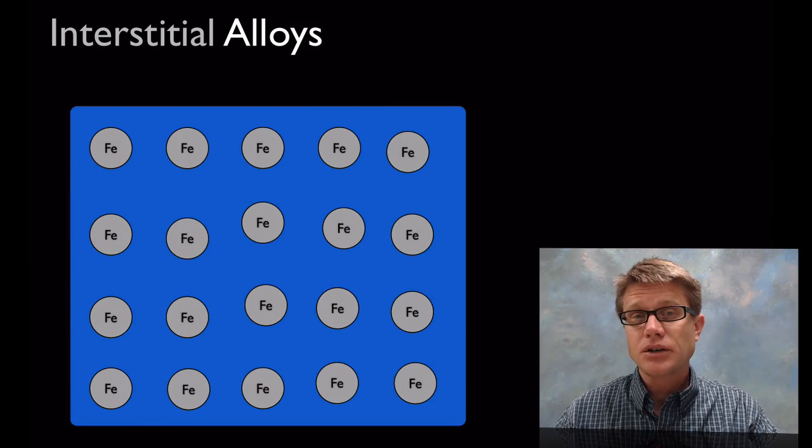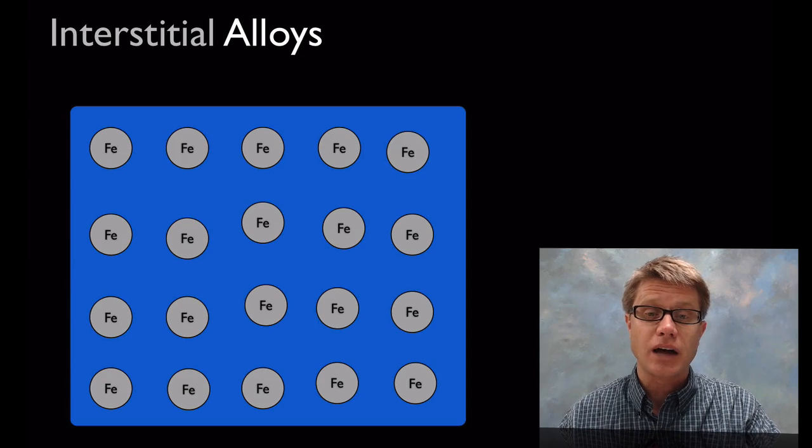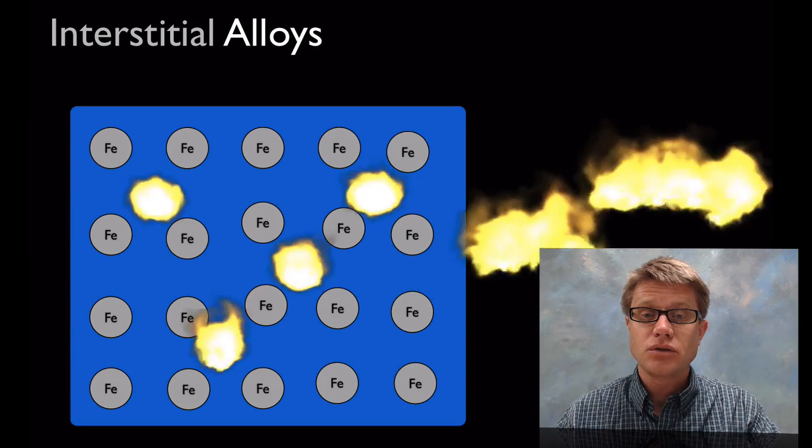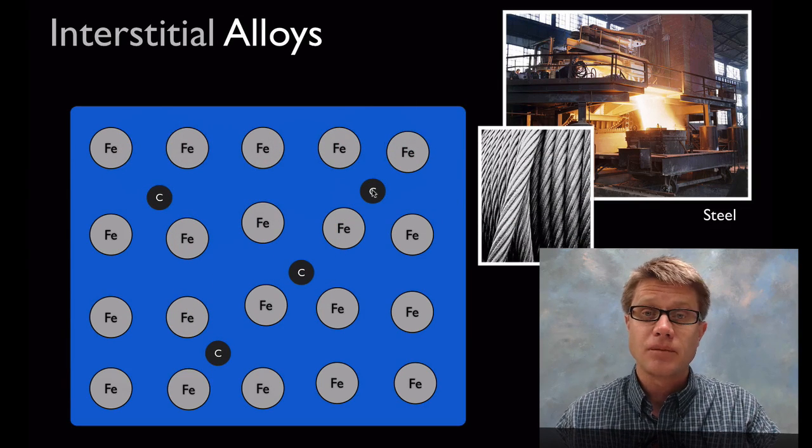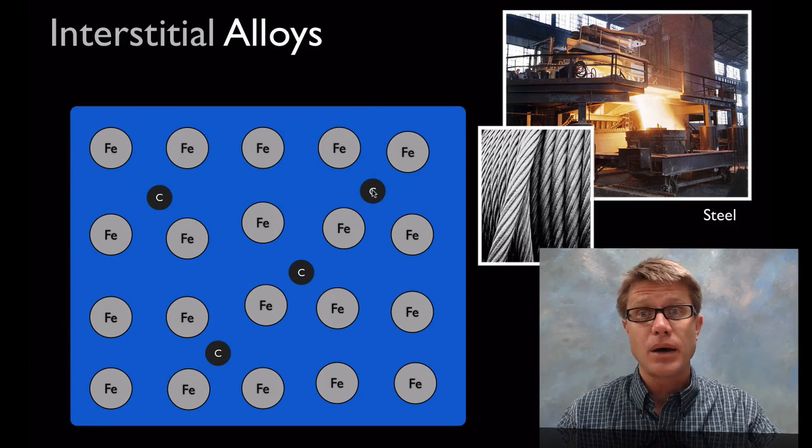But we can break these alloys into basically two different parts. We can have what are called interstitial alloys. Interstitial alloys, a great example would be steel. What we're doing when we're heating it up is we're allowing carbon to fill the holes inside that iron. And what it does is increase the density and it's going to make it a better metal.